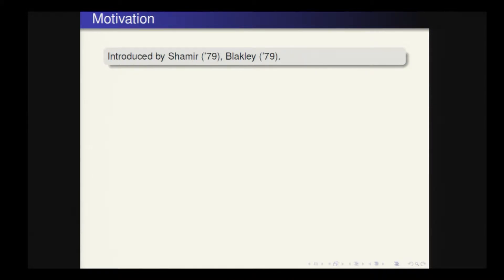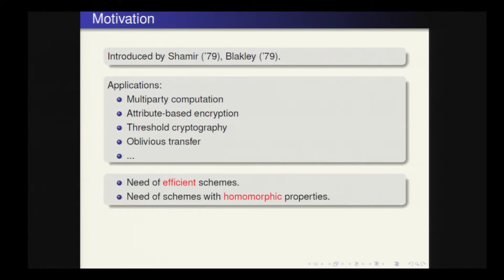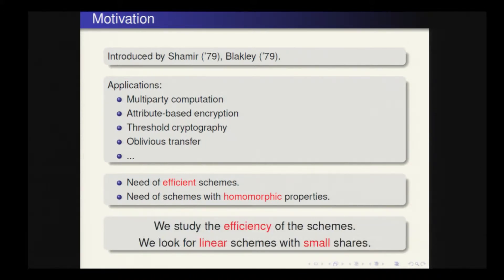Secret sharing schemes were introduced by Shamir and Blakley in 1979. The original motivation was to safeguard keys, but they soon appeared to be a very important cryptographic primitive, with applications in many areas such as multi-party computation, attribute-based encryption, threshold cryptography, and oblivious transfer. For using schemes in these applications, we need efficient schemes, and in particular, in many of these applications, we need schemes with homomorphic properties. In this work, we study the efficiency of the schemes and look for linear schemes with small shares.